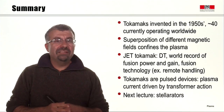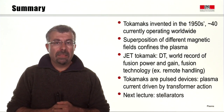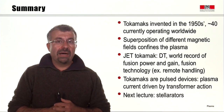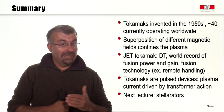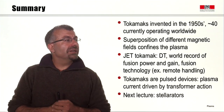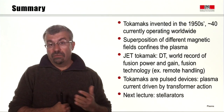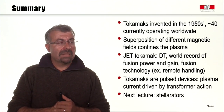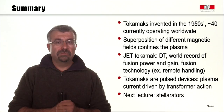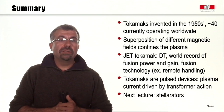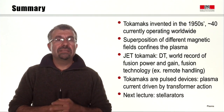To summarize this lecture: tokamaks have been invented in the 1950s and there are around 40 currently operating worldwide. In a tokamak, the plasma is confined thanks to the superposition of different magnetic fields. The JET tokamak holds the world record of fusion power and fusion gain, and is a great example of fusion technologies such as remote handling. It is important to note that tokamaks are pulsed devices — the plasma current is driven by transformer action. In the next lecture, we will look at the stellarator, an example of confinement that in principle can be steady state.